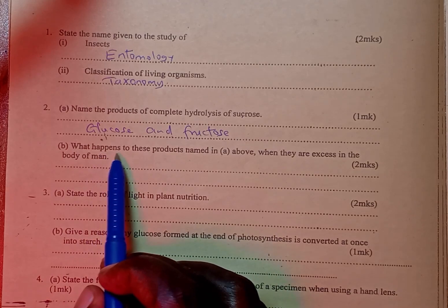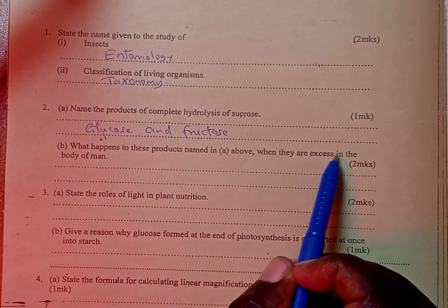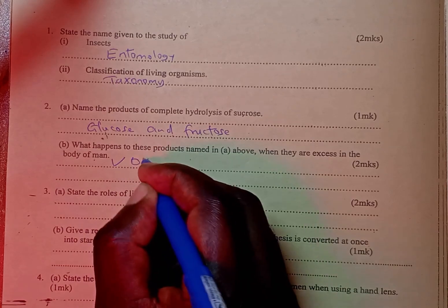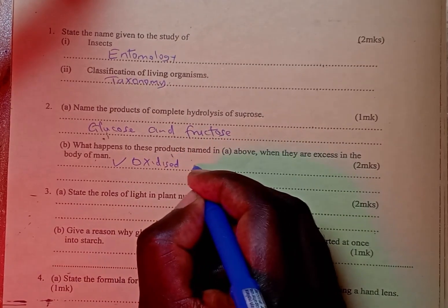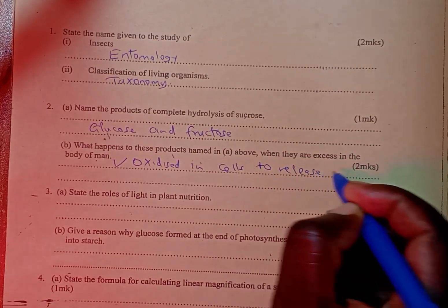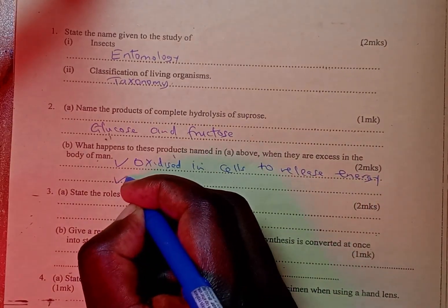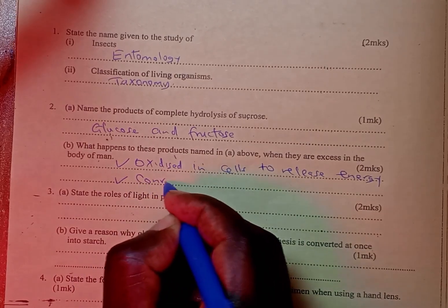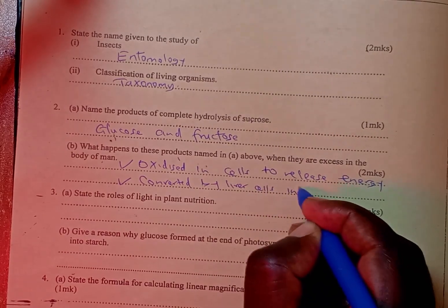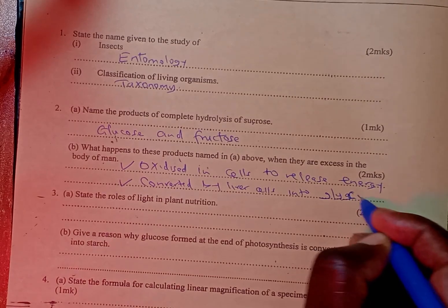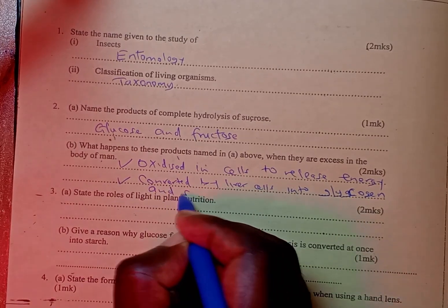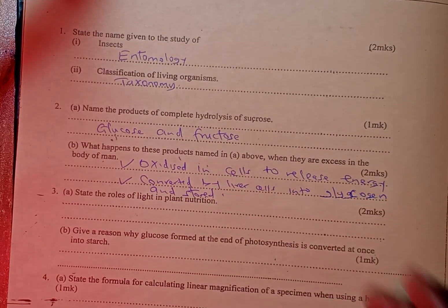Glucose and fructose are simple carbohydrates known as monosaccharides. Part B of the question reads: what happens to the products named in A above when they are in excess in the human body? Number 1 is that they are oxidized in cells to release energy. Number 2, they are converted by liver cells into glycogen and stored. Remember, glycogen is stored food in animals.